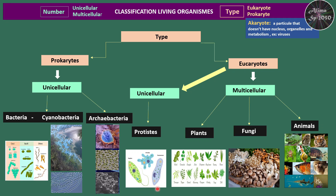All living organisms are made up of cells. The classification is according to the number of cells — unicellular or multicellular — and according to the type: eukaryotes, whose genetic material is inside a nucleus, and prokaryotes, whose genetic material is free in the cytoplasm. There is another type called akaryotes, which is a particle that doesn't have a nucleus, organelles, or metabolism — for example, viruses.